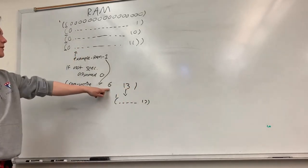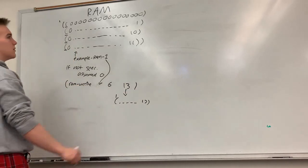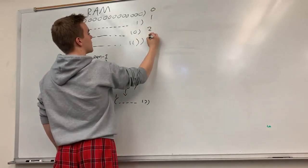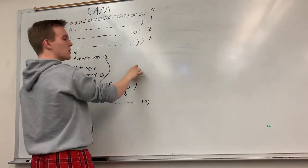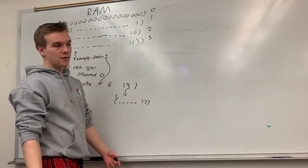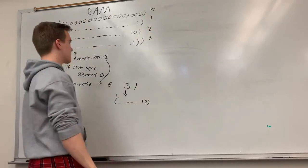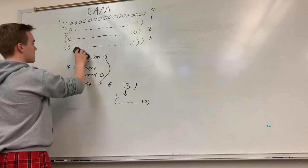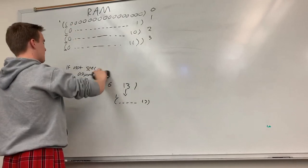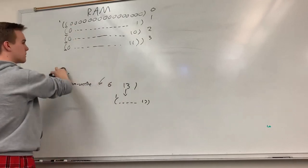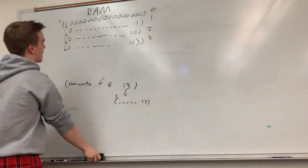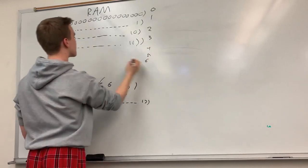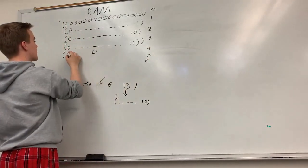If I try to write to location 6 — this is 0, 1, 2, 3 — well, there's no location 6, so how do I write to location 6? If I want to write to location 6, I have to make locations 4, 5, and 6, assuming that they contain zeros.